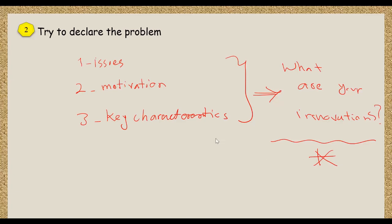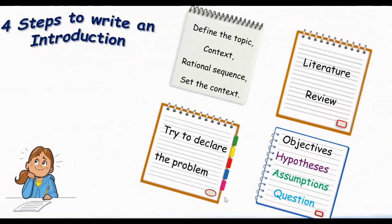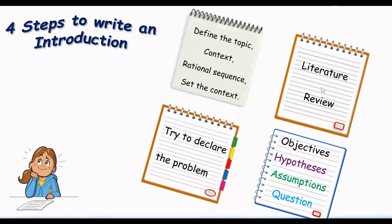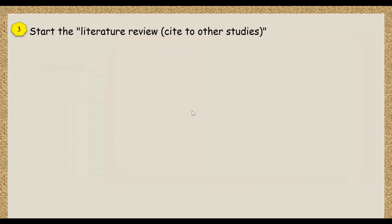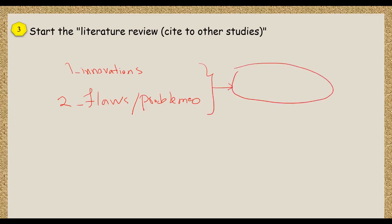And for the third one, the third one is literature review. Start the literature review at main site to other studies. By considering this point beside the innovation of your work and also the flaws and issues of previous studies compared to your work, you will be able to recognize available gaps and detect them.